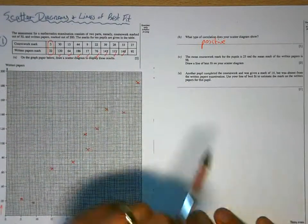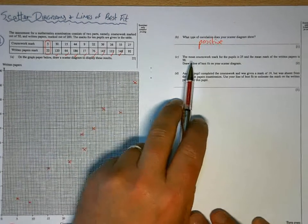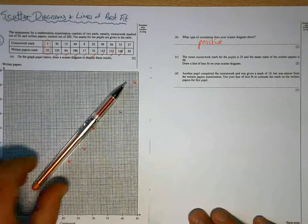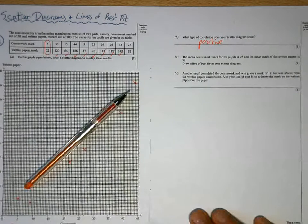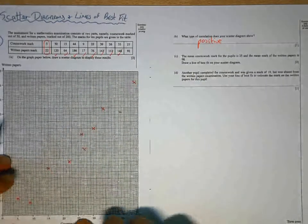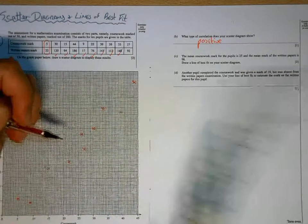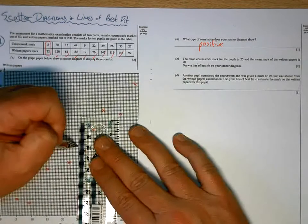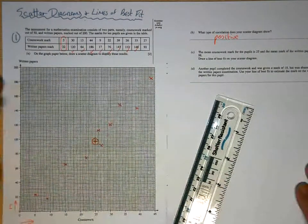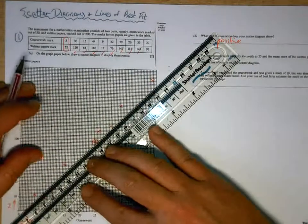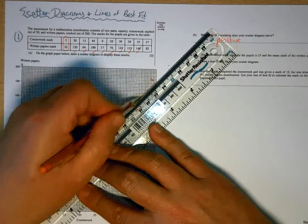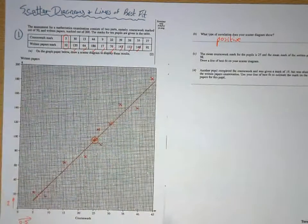We're going to draw a line of best fit now. Sometimes you'll be given the mean points to draw that line of best fit. If you're given the mean points, then you plot that and the line of best fit goes through it. If you're not given this information, then you just draw your line so it follows the trend of the points that you've got. But here we're given that the mean coursework mark for pupils is 25 and the mean written is 98. So we put that point on. 25 is here and 98 will be there. And we mark that in a different way to show that that isn't actual data. That's what the averages are. So the line of best fit has to go through there and it follows the general gradient or steepness of the graph that we've got.